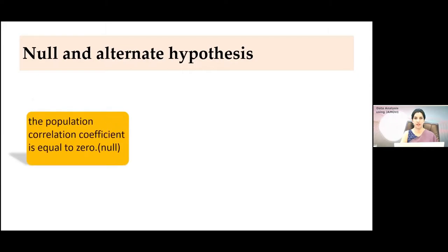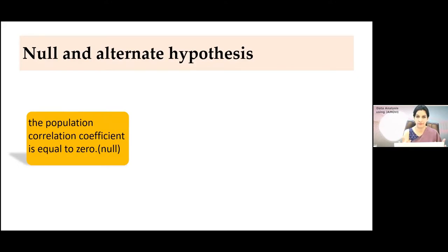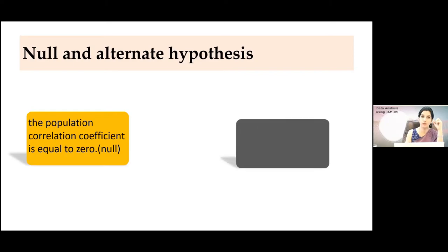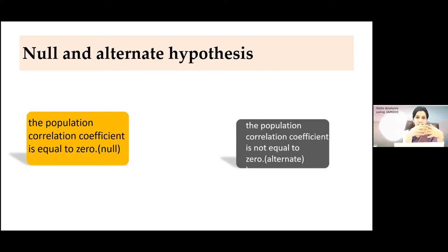For the null and alternate hypothesis, since we always take a sample to estimate the population parameter, correlation is an example of inferential statistics — not descriptive. Mean, median, mode, standard deviation, and variance are descriptive statistics. In the null hypothesis, we state that the population correlation coefficient equals zero. In the alternate hypothesis, we state that the population correlation coefficient is not equal to zero.